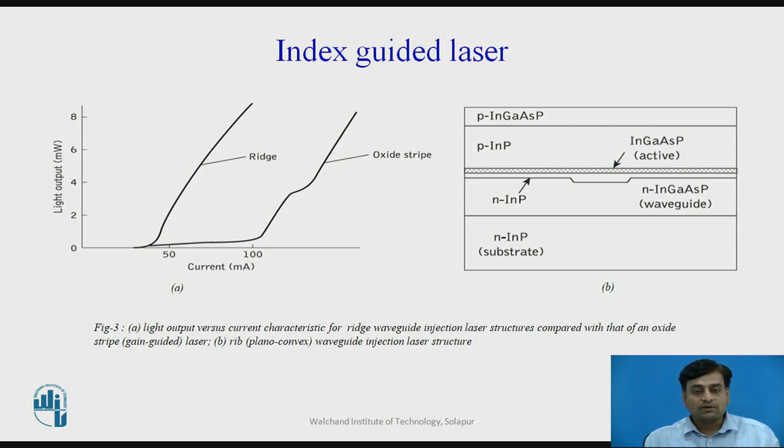The inverted rib waveguide device, sometimes called plano-convex waveguide, is illustrated in figure number 3B.